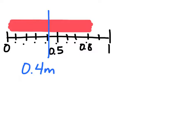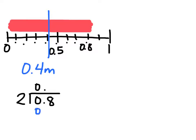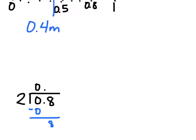You're not always going to want to draw a number line, so let me show you how to do this using traditional division. Let's begin by writing our problem: 2 goes into 0.8, or 0.8 divided by 2. It's important to line up your decimal point in the quotient with the decimal point in the dividend by bringing it straight up and dropping it down here. Let's begin by dividing the ones by 2: zero ones divided by 2 is zero ones. We multiply 0 times 2 and subtract that away to give us our remainder so we can continue working.